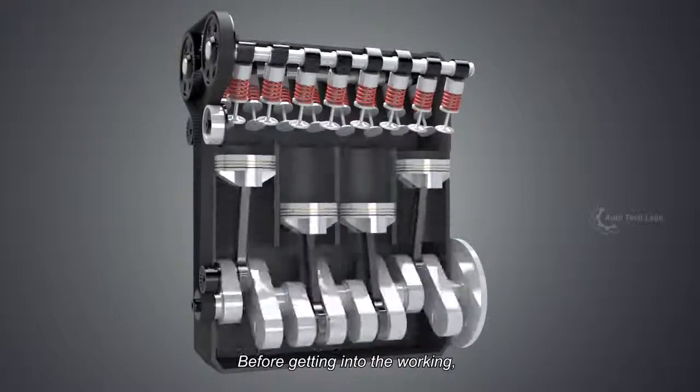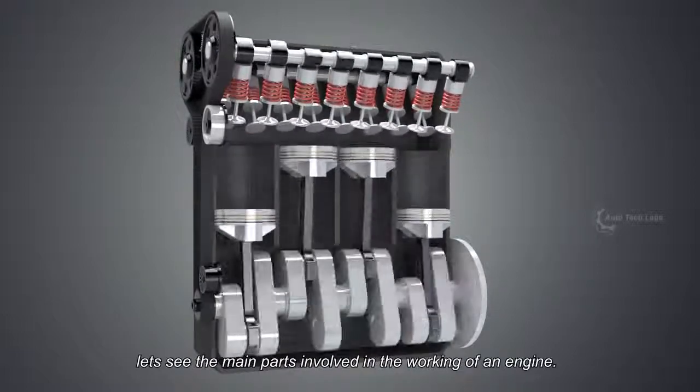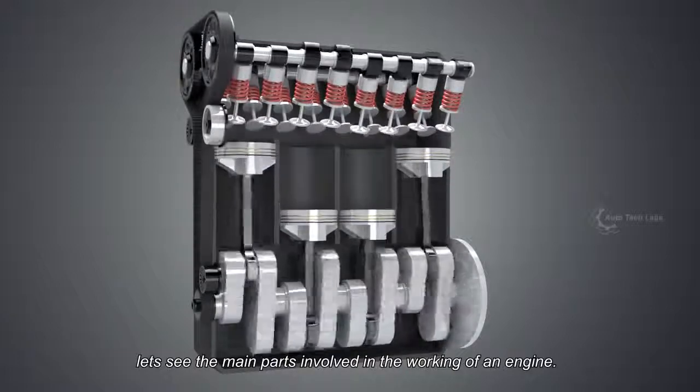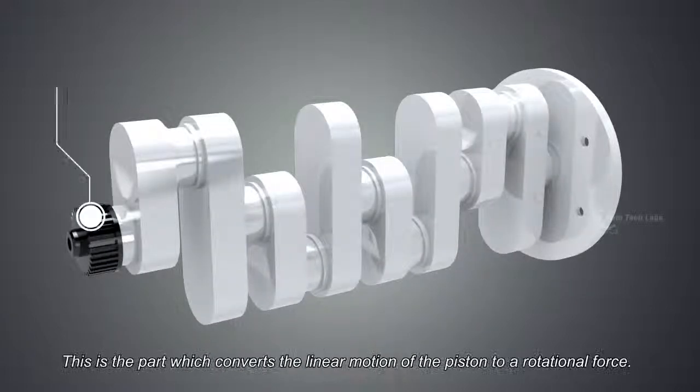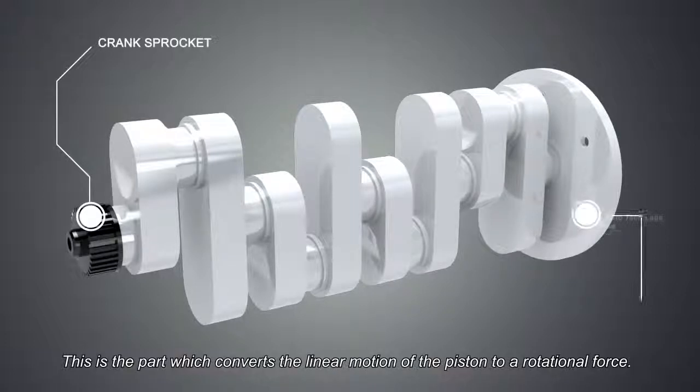Before getting into the working, let's see the main parts involved in the working of an engine. First, the crankshaft. This is the part which converts the linear motion of the piston to a rotational force.